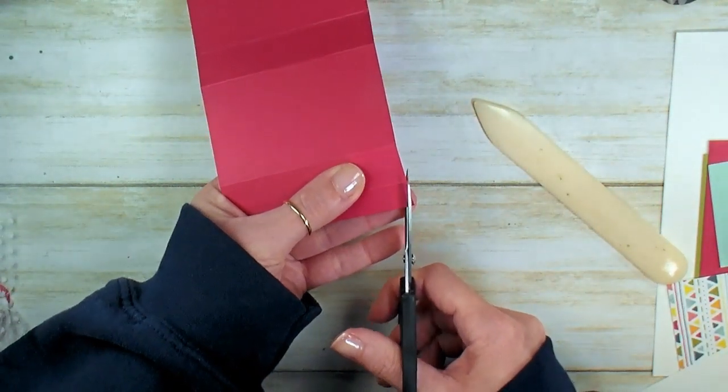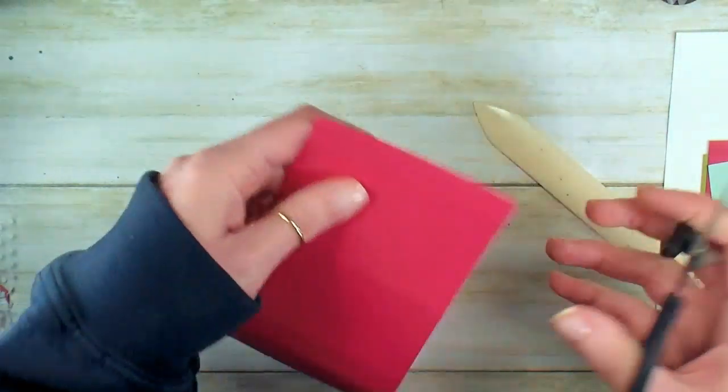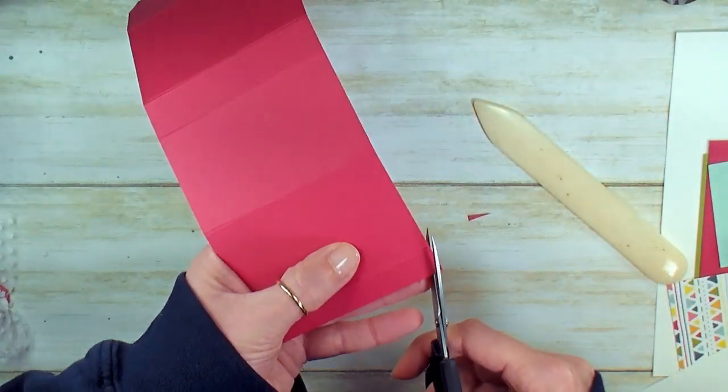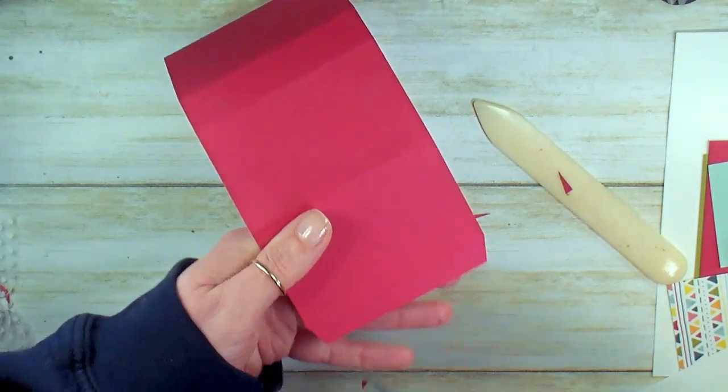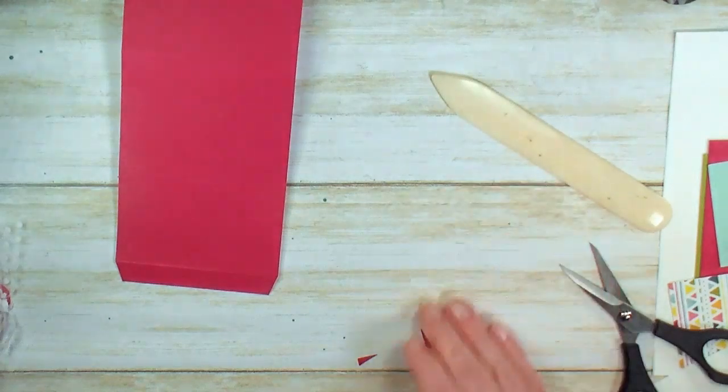I'm going to grab a pair of scissors and bevel the edge so we get a nice, clean fold. On these two little glue tabs, just make a little cut. Nice and clean. Now let's work on that mechanism.